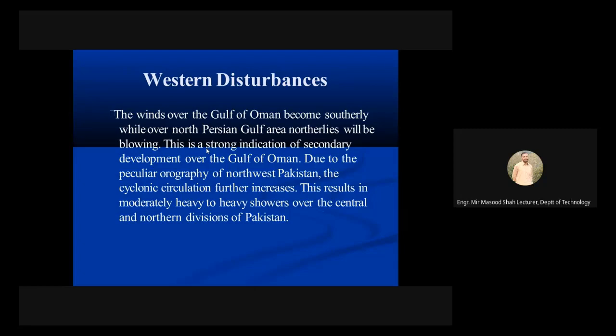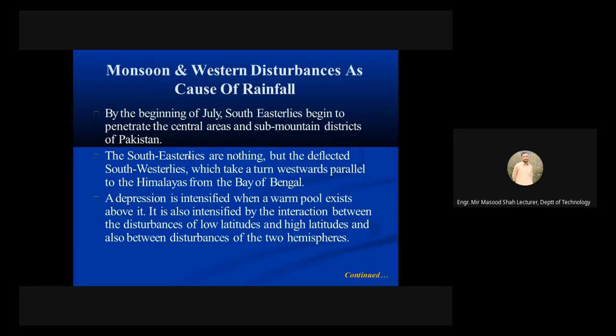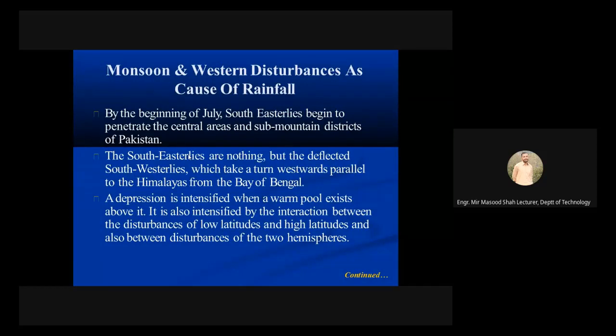By the beginning of July, south-easterlies begin to penetrate the central areas and sub-mountain districts of Pakistan. The south-easterlies are nothing but deflected south-westerlies which take a turn westwards parallel to the Himalayas from the Bay of Bengal. A depression is intensified when a warm pool exists above it. It is also intensified by the interaction between disturbances of low latitudes and high latitudes, and also between disturbances of the two hemispheres.